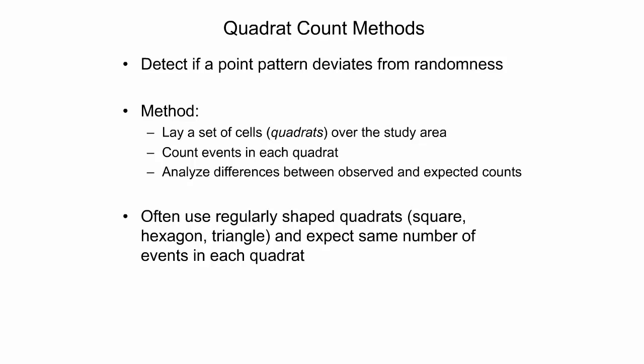One common approach is to use quadrats of equal size and shape so that they cover the whole study area without gaps, which is possible with squares, hexagons, or triangles. A common, simple starting point for analysis is to expect the same number of event counts in each quadrat independent of its location.